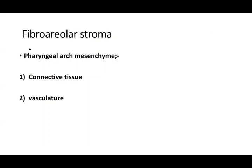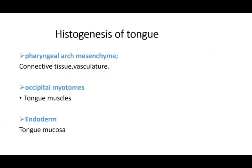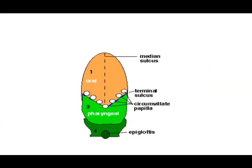The mucous membrane of the anterior two-thirds comes from the lateral lingual swellings of the first arch; the posterior one-third comes from endoderm of the third and fourth arches. The pharyngeal arch mesenchyme provides connective tissue and vasculature; occipital myotomes give the tongue muscles, supplied by the hypoglossal nerve. The papillae and taste buds complete the tongue structure.